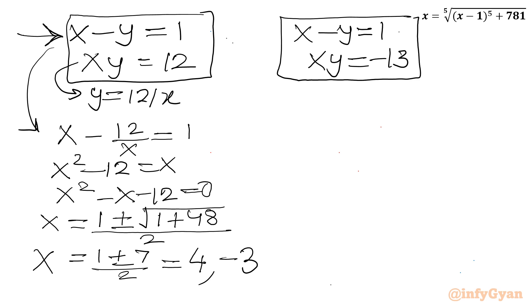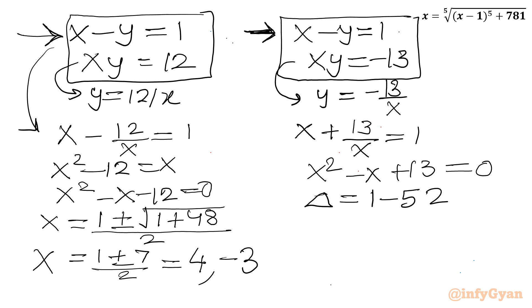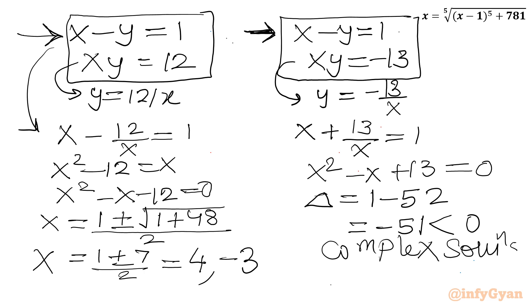Now for the second system: xy equal to negative 13 and x minus y equal to 1. From xy equal to negative 13, y equals negative 13 over x. Substituting: x plus 13 over x equal to 1, giving x squared minus x plus 13 equal to 0. Checking the discriminant: b squared minus 4ac equals 1 minus 52 equals negative 51. Since the discriminant is negative, it will generate complex solutions, so we reject this case.